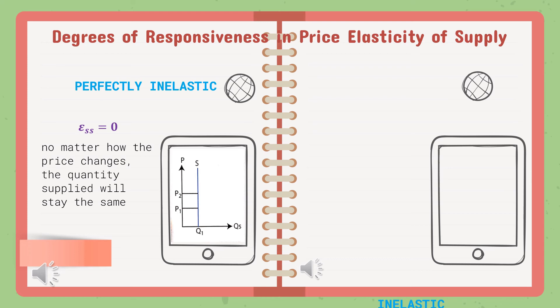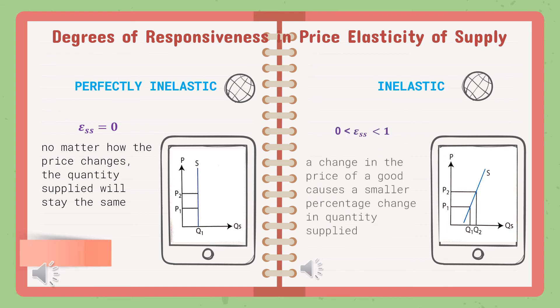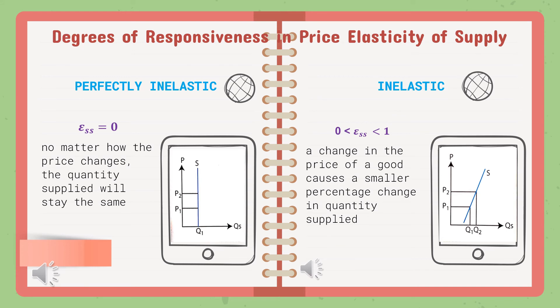The second degree is Inelastic, where elasticity of supply is between 0 and 1. A change in the price of a good causes a smaller percentage change in quantity supplied. For instance, the quantity supplied of nuclear power will only increase by a small percentage despite a large increase in price, because nuclear power takes a long time to be made and processed.